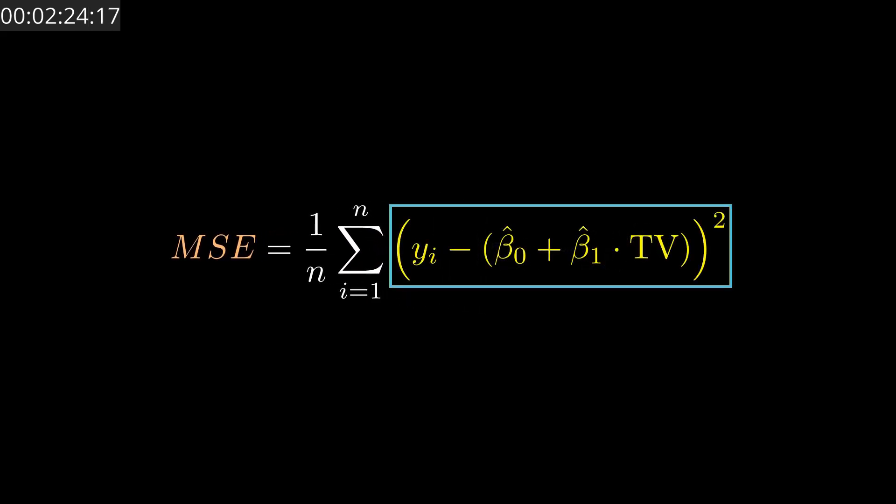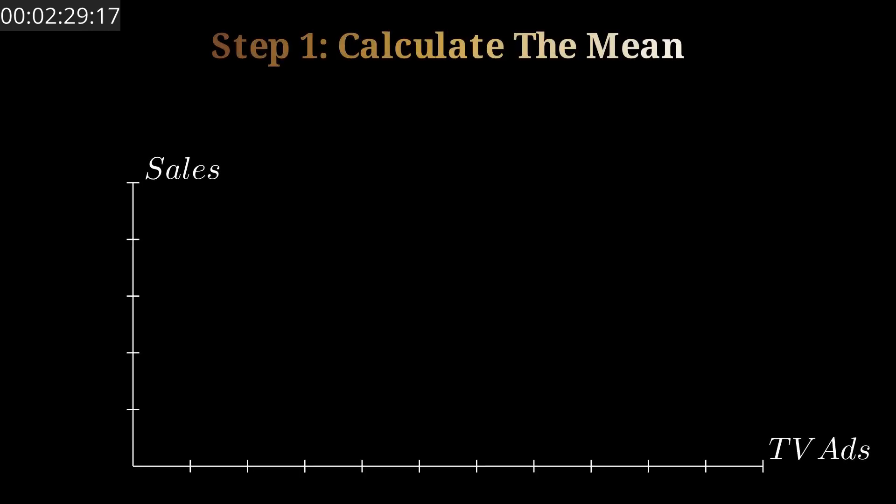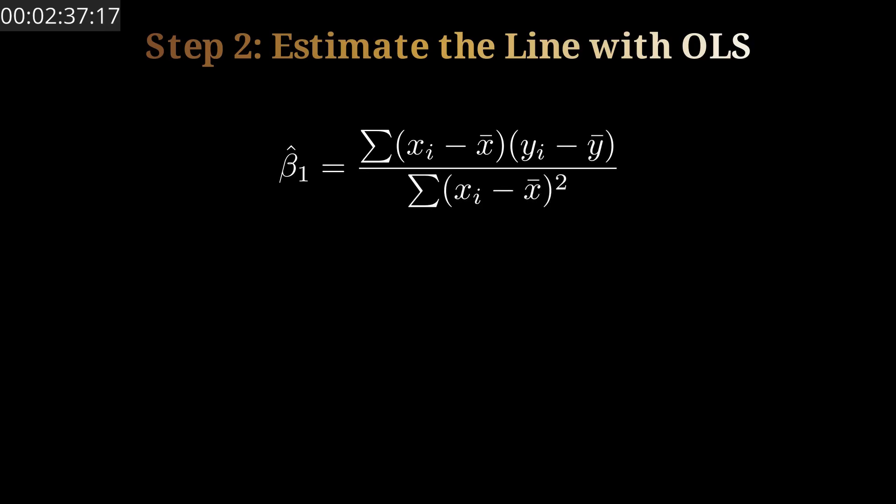So taking it step by step, the process looks something like this. First, we calculate the mean associated with the predictors and the response—TV and sales. Think of it as finding the average point along each axis. Second, we use the OLS formulas to estimate the slope and the intercept that minimize the mean squared error.